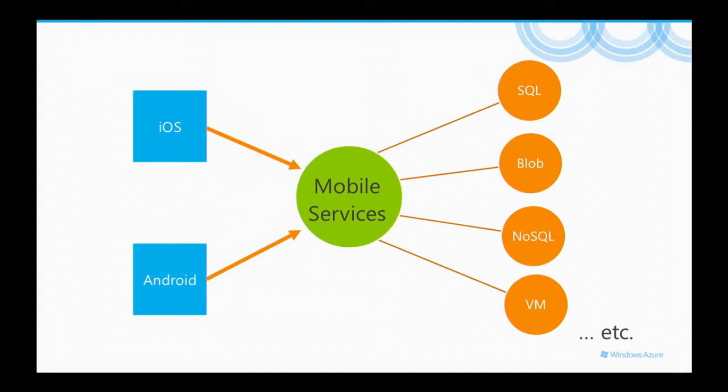So you can build mobile apps faster by using turnkey solutions that will provide push notifications, cloud storage, authentication, that kind of stuff. But oftentimes you're really limited to what you're given in that turnkey solution — it's very hard to customize it. A cool thing that was announced last night by Scott Guthrie at Microsoft's keynote talk was that you don't have to have any kind of compromise here.